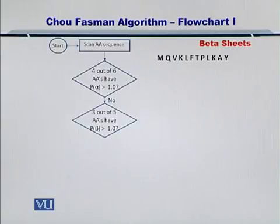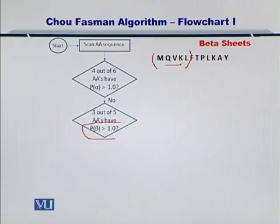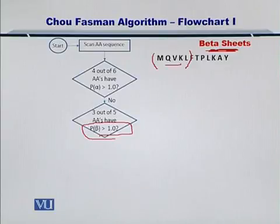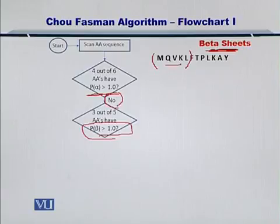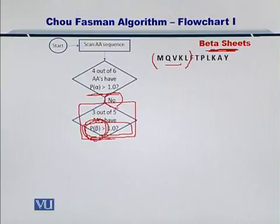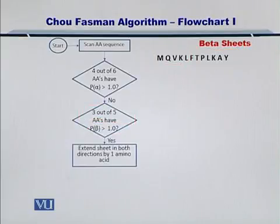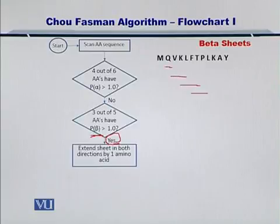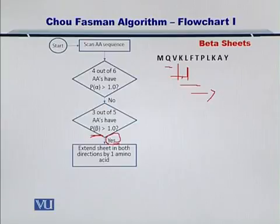But if that is not the case, and three out of five amino acids have a propensity for forming a beta sheet that is greater than one, then you may actually want to evaluate them for beta sheets. So although you evaluated four out of six amino acids for formation of the alpha helix and the result was no, you then go on to evaluate three out of five amino acids by looking at their propensity for forming a beta sheet to be over one. If that is the case, you can extend the beta sheet, incrementing at each step by one amino acid at a time.